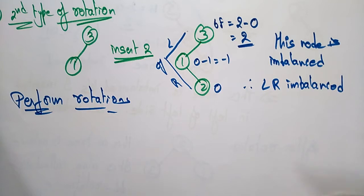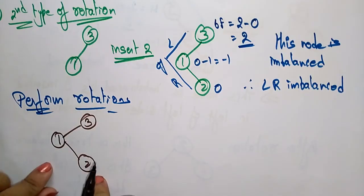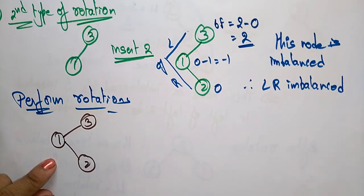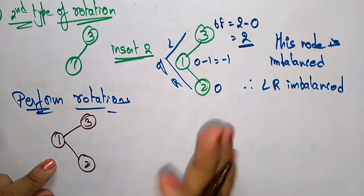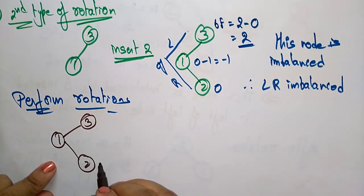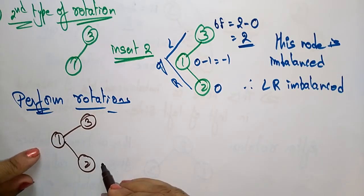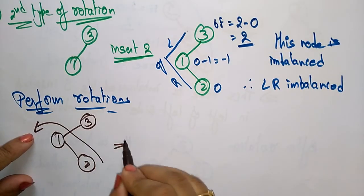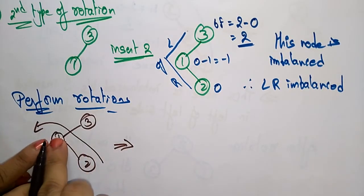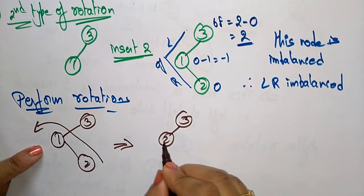To perform the rotation, consider the three nodes: 3 (root), 1 (left), and 2 (right of 1). First, perform a rotation on the subtree of nodes 1 and 2, since 3 is the root of that subtree. After performing this rotation, 2 comes up and 1 shifts down, giving us the arrangement 3, 2, 1.